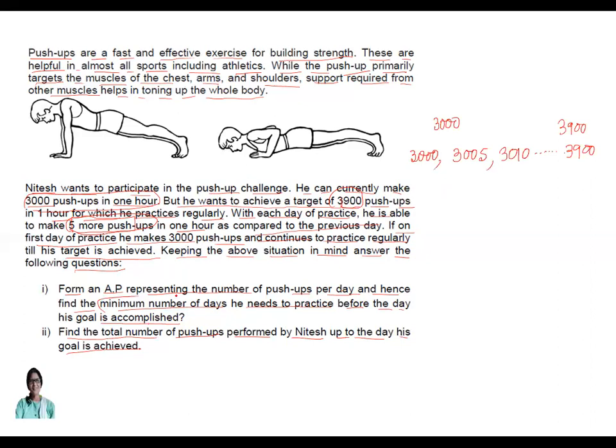Now you have to find the minimum number of days he can succeed to do 3900. That means you have to find out n here for which nth term is 3900. So first term is 3000. Common difference is 5, always adding 5. So d = 5. You know formula for a_n, that is a plus (n minus 1) into d. So a is 3000, (n minus 1) into d, d is equal to 5, and nth term is 3900.